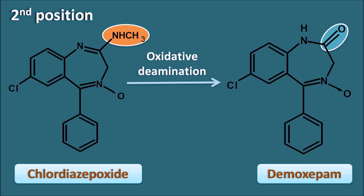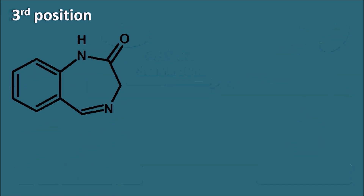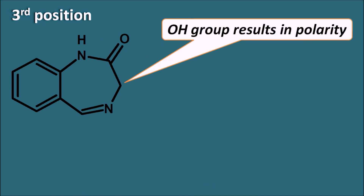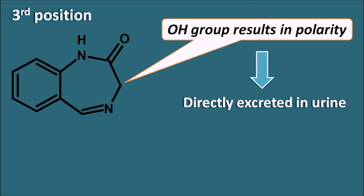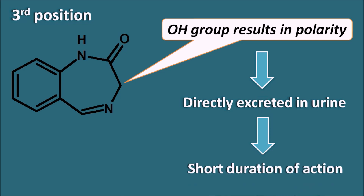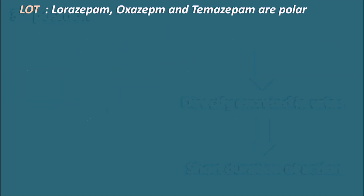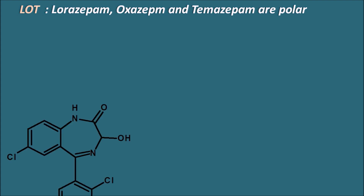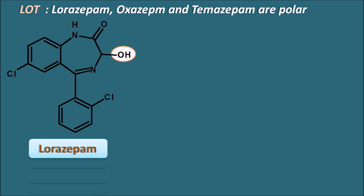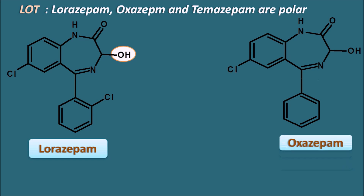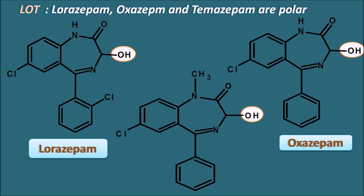At the third position, if an -OH group is present, it increases the polarity of the drug, causing it to be excreted unchanged in the urine, resulting in a short duration of action. Benzodiazepines with an -OH at position three include Lorazepam, Oxazepam, and Temazepam — remembered as 'L-O-T' — all of which are short-acting Benzodiazepines.